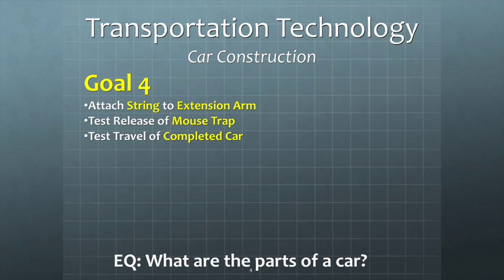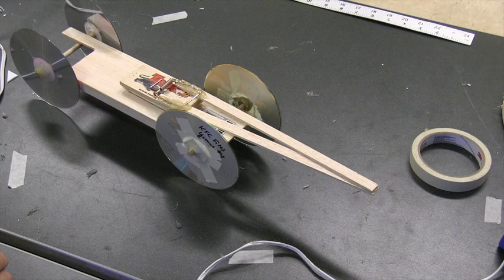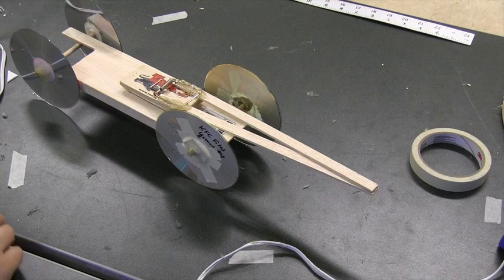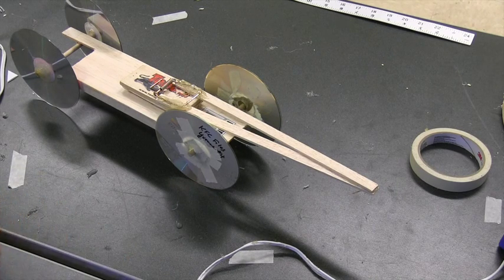We're now ready to attack goal number four, which is attaching the string to the extension arm and testing the mousetrap car to see how well it goes.